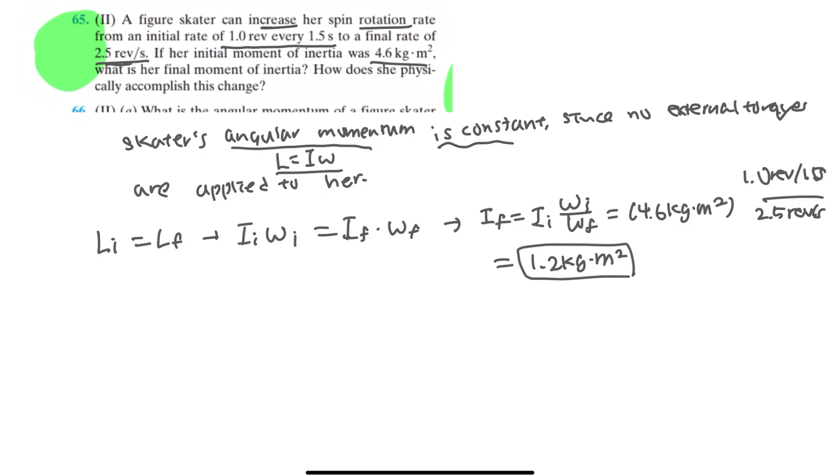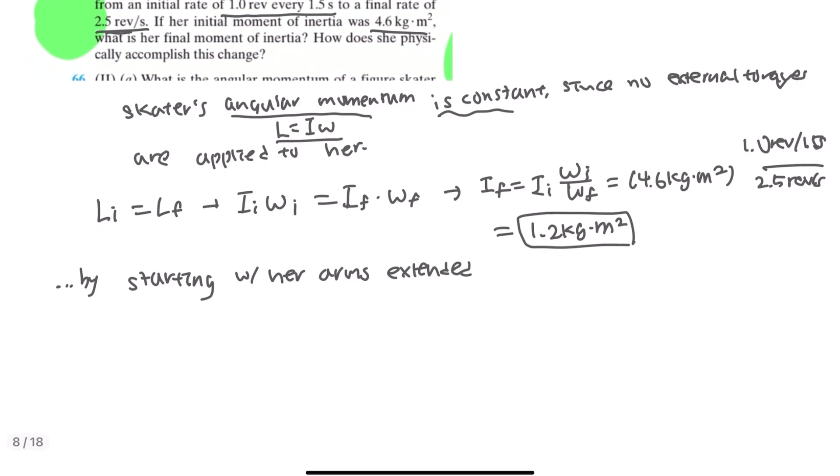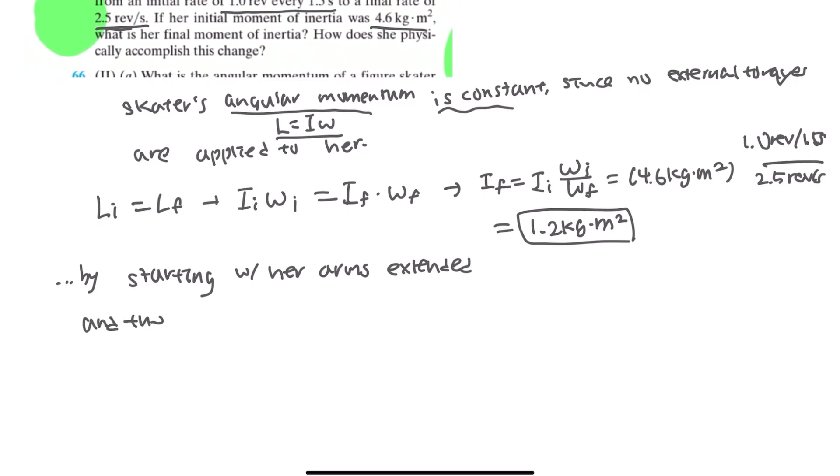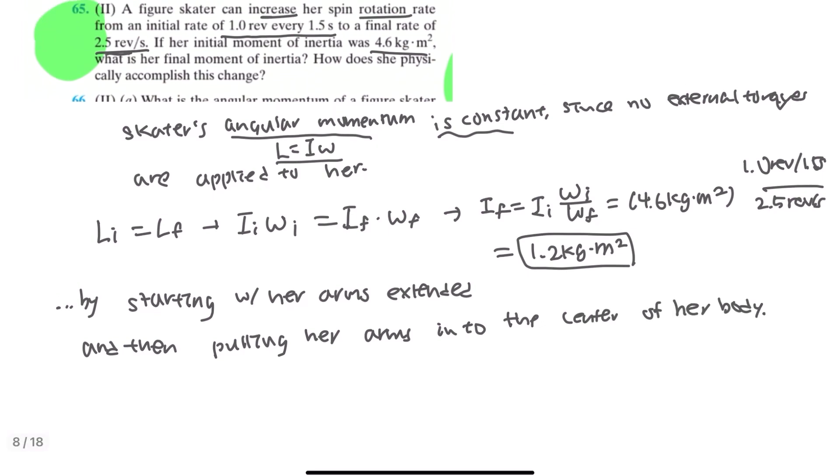And you can see that she accomplishes this by starting with her arms extended, which would be the initial angular velocity, and then pulling her arms into the center of her body, which would be the final angular velocity.